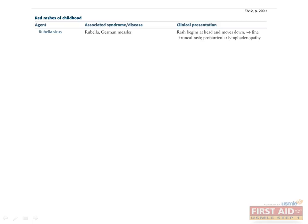Rubella causes a rash that begins at the head and moves downward. It can also cause postauricular lymphadenopathy. The rash of measles virus also begins at the head and moves downward. However, it is often preceded by a cough, coryza — which is basically a head cold — and conjunctivitis, which are the three C's of measles, as well as blue-white spots or Koplik spots on the buccal mucosa.